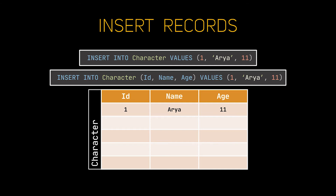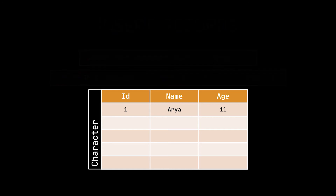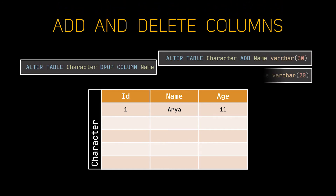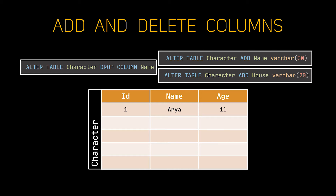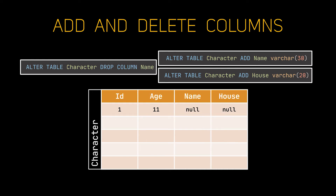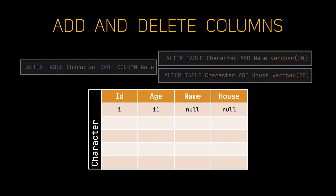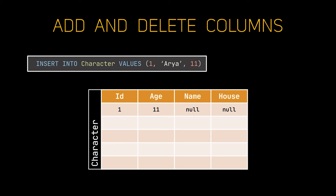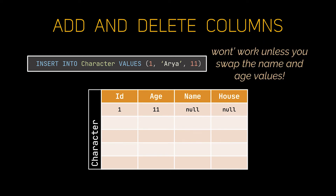Whatever format you choose, both of them will add the same additional row to our table. Now, to drop or add a column in our table after creating it, we need to specify the column in question in case of deletion, and in case we are adding a column, we need to specify its name and its type. In this example, we are deleting the column name and then re-adding it. We also added a new column that holds a string inside it named 'house.' You can see that we kind of messed up our table, because after removing the name column we lost the value stored inside it. Additionally, if you are still using INSERT INTO without specifying the column names, it won't work unless you rearrange the order of the values, as the age and name columns swapped places. This is why the second format is a better approach.